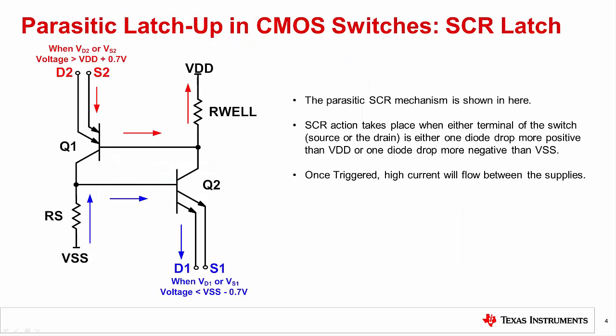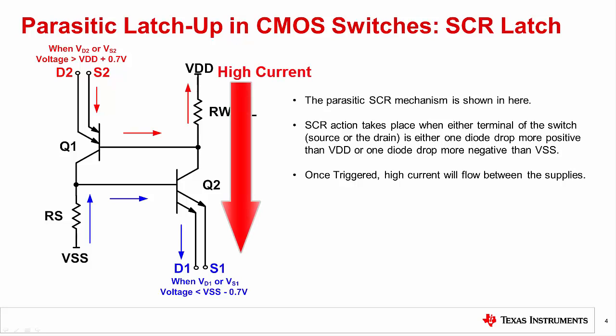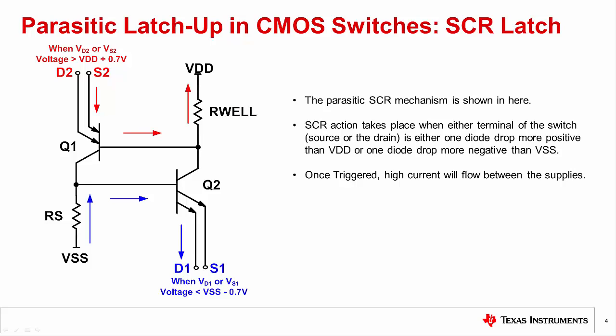Multiplexers are frequently at the front end of data acquisition systems. Inputs can be from sensors placed remotely, and a common problem is that the multiplexer could see an overvoltage transient on its input channels. If a voltage applied at D2 or S2 is more positive than VDD, current will flow into the gate of the thyristor and turn on transistor Q1. Similarly, transistor Q2 can be triggered by applying a voltage more negative than VSS at D1 or S1. If the amplitude and duration of the current are sufficient, the thyristor is triggered, entering a very low resistive state with very high current flow, quickly leading to destruction of the component. The thyristor can be switched off only by switching off the supply voltage.